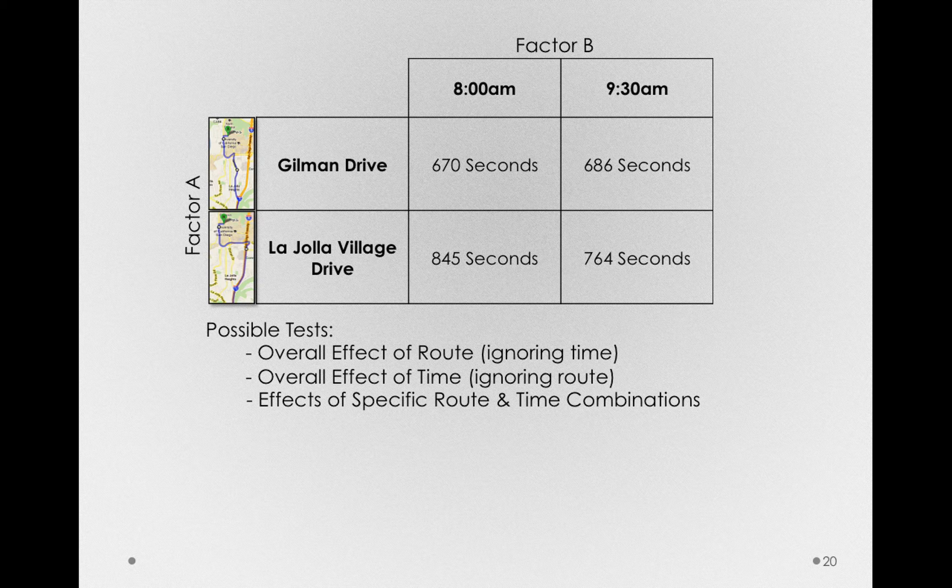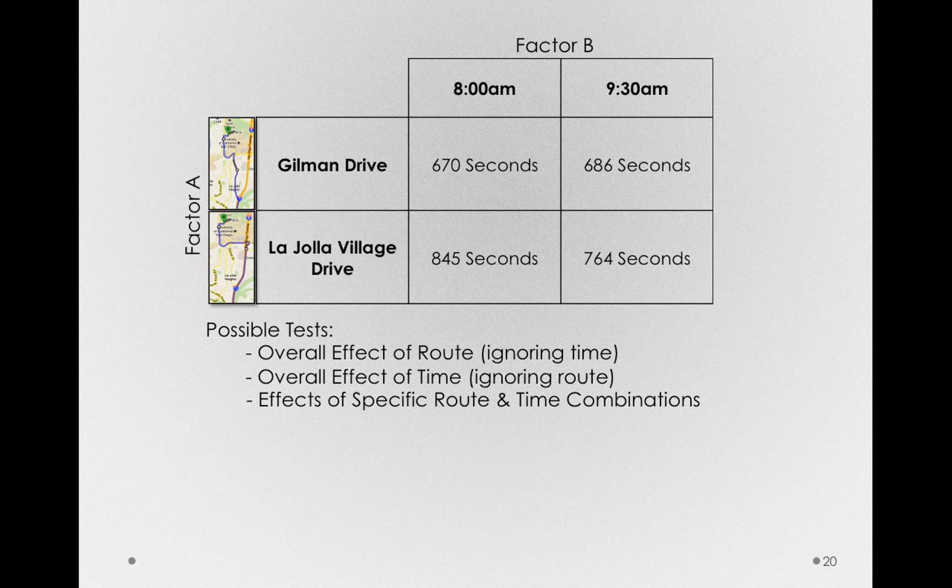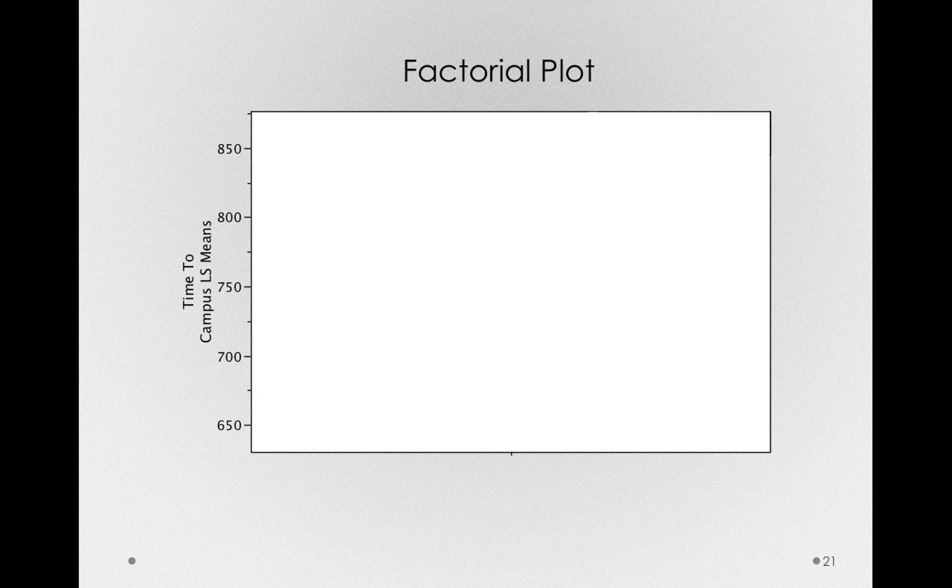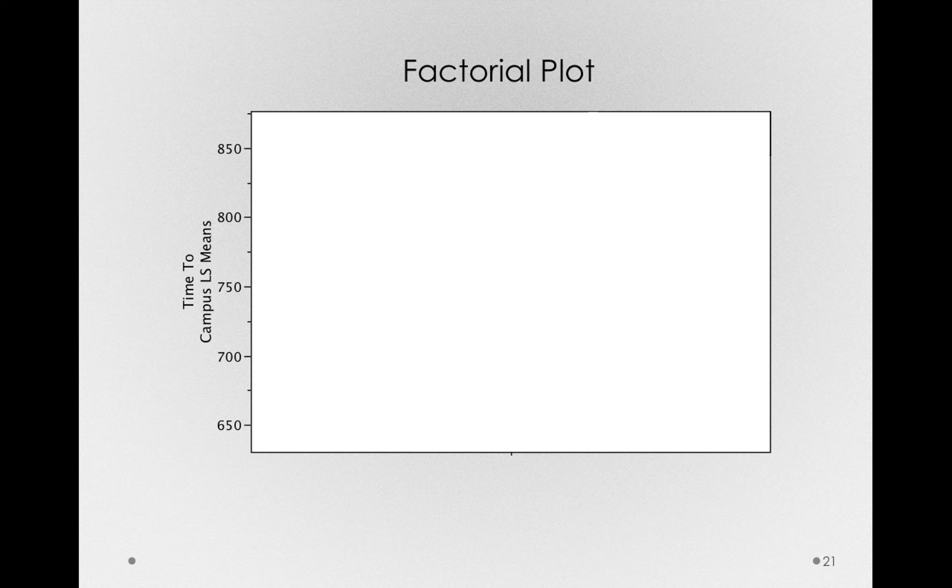Just looking at these means in a table doesn't show the effects as clearly as if we plot them. So let's develop right now the factorial plot, a typical way to look at data when we're dealing with factorial experiments.